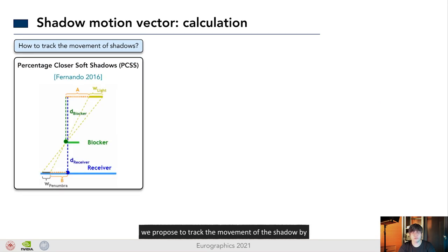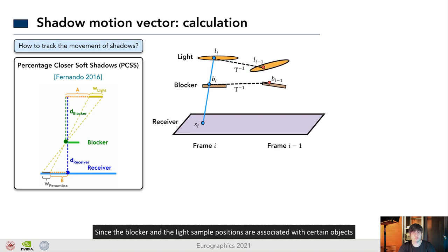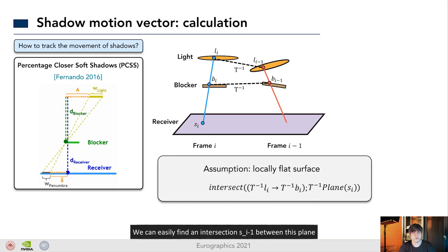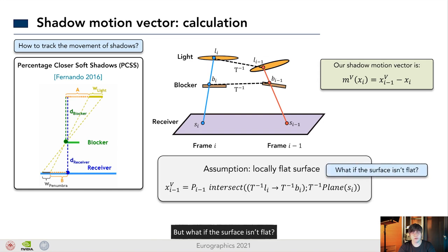Inspired by PCSS method, we propose to track the movement of shadows by following the blocker and light position over time, given two consecutive frames. For a pixel in shadow, we know exactly the world space position of its shading point s sub i, the blocker position b sub i, and the light sample position l sub i. Since the blocker and the light sample positions are associated with certain objects, we immediately know their position in previous frame. Now, suppose that the geometry around s sub i is a local flat surface. We can easily find the intersection s sub i minus 1 between this plane and the line connecting light and the blocker. Finally, we project this intersection to the image space and this projected pixel is our tracked shadow position. Our motion vector can be formulated like this.